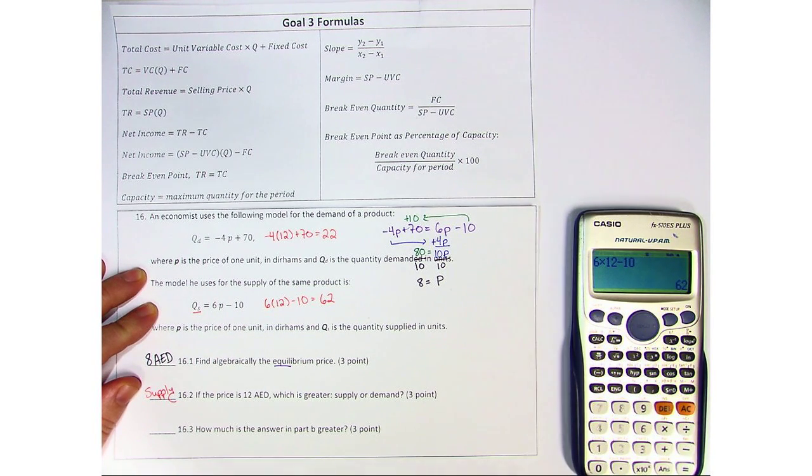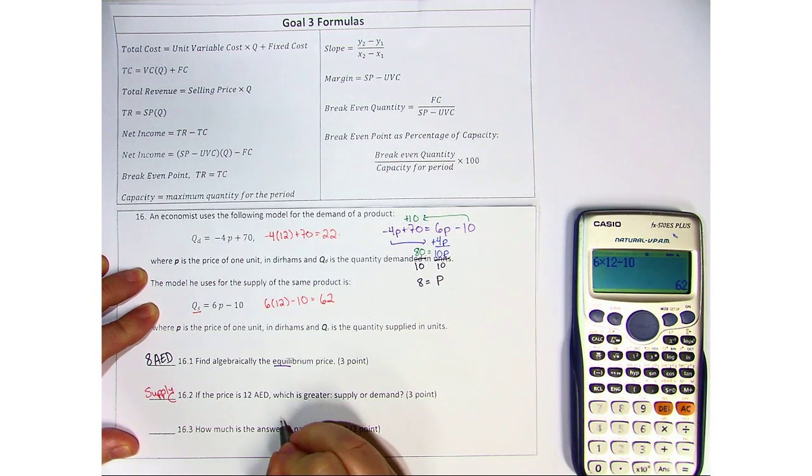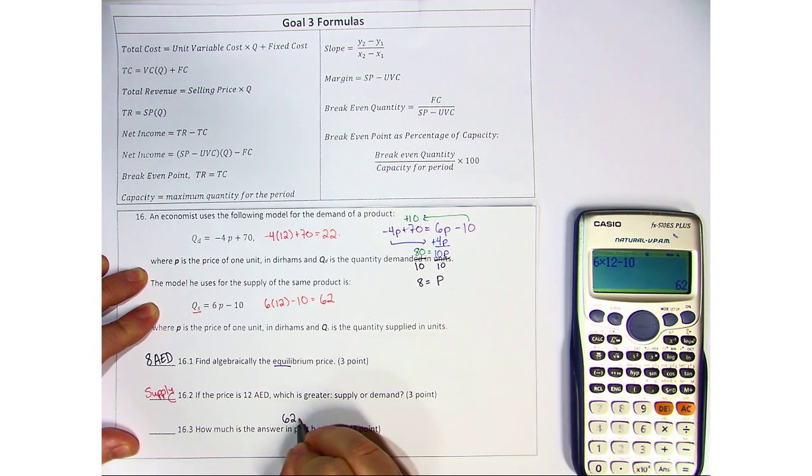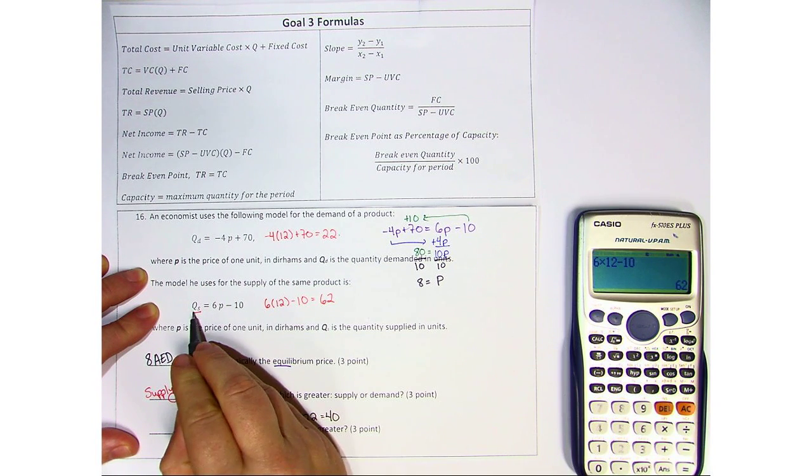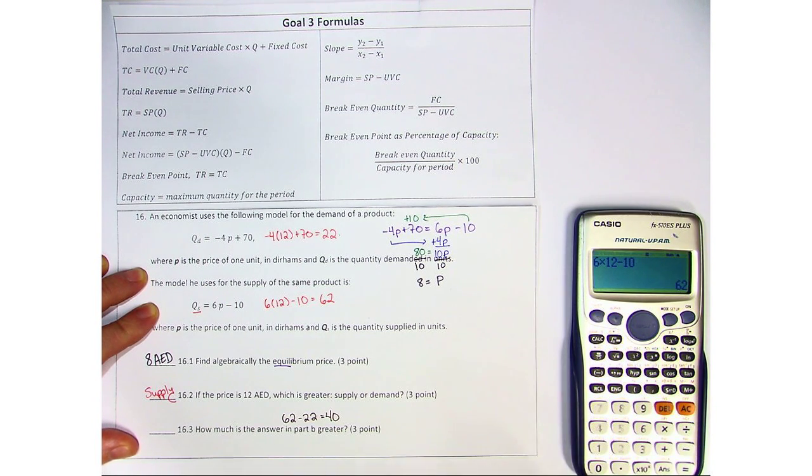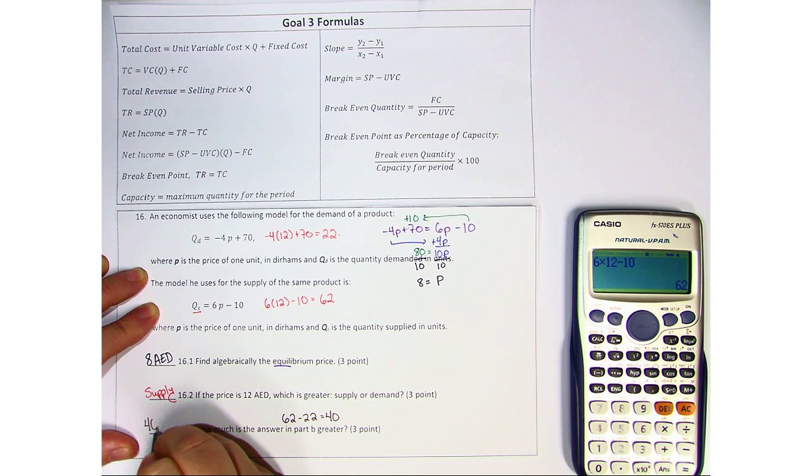And then how much is the answer in part B greater? Well, this was 22, this was 62, so 62 minus 22 is 40. And remember, Qs and Qd are quantities, so the answer is going to be 40 units.